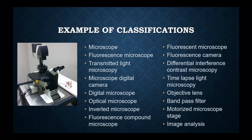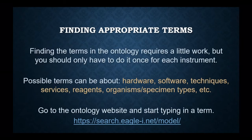Being a microscope person, here are some classifications I was able to pull up for a particular microscope. You can see there are quite a few different things that describe it and what it can do. It takes a little bit of work to look things up in the ontology, but you'll only have to do it once for each instrument or service. Think about describing the hardware, the software, the techniques you can perform, the services you provide if you're more of a service lab, the reagents you use, and the organisms or specimen types it applies to. You can go to the website and search for terms — don't be satisfied with a list of three or four; you might be able to come up with as many as shown for that microscope.